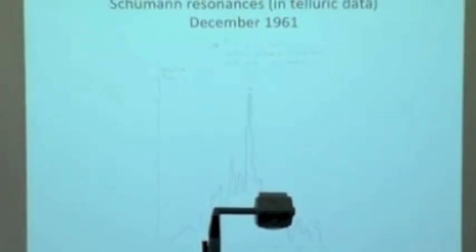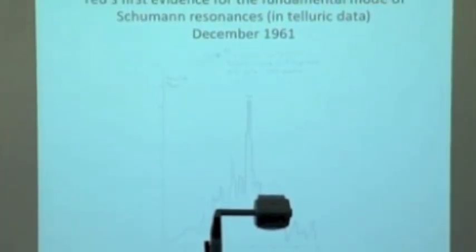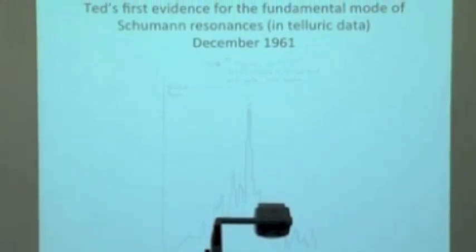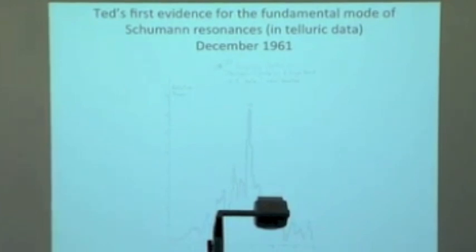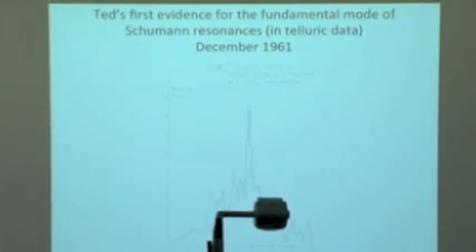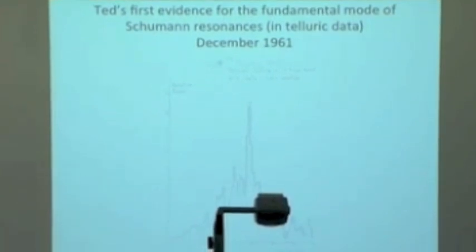But we also found this. Ted's first detection of Schumann resonances was in the telluric data. He put electrodes in the earth connecting two electrodes, measured the voltage difference between them, digitized the data. He did his usual neat hand plot of the data and did a power spectrum analysis. And lo and behold, 7.8 hertz, the fundamental frequency of Schumann resonance. That was in December of 1961.